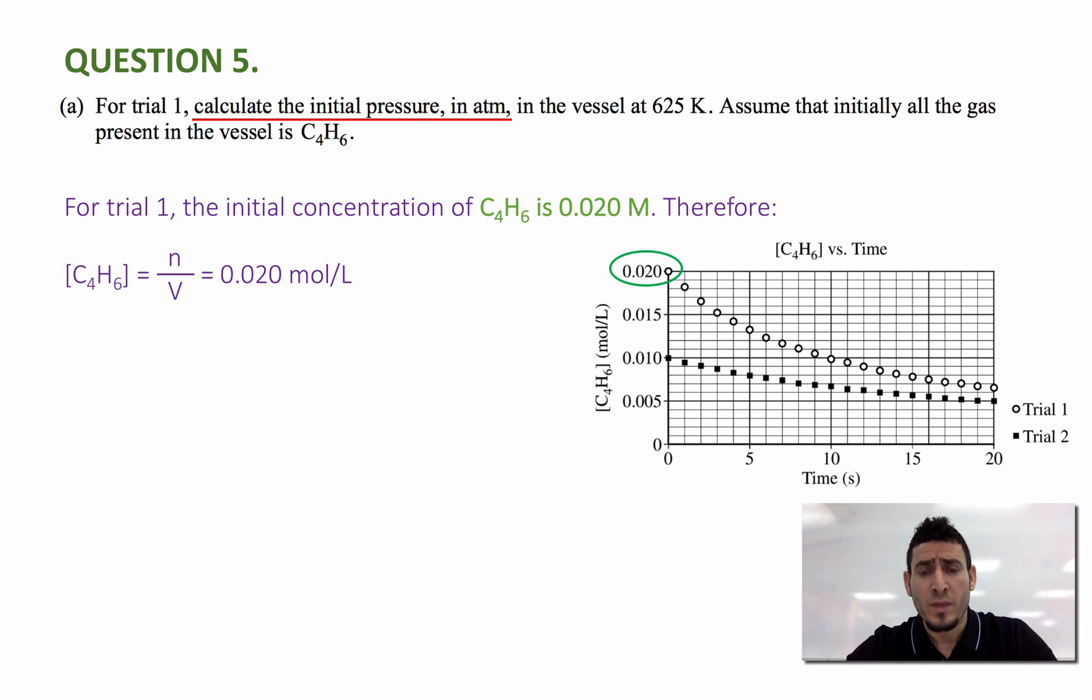We can see the concentration axis intercept is equal to 0.020 for trial one, so I can say that n over V is equal to 0.020 mole per liter. Now why do I need this ratio n over V? Because to use the ideal gas law expression PV equals nRT.